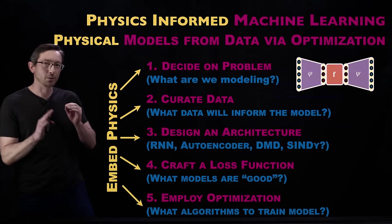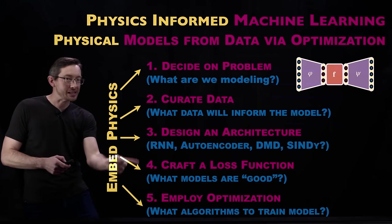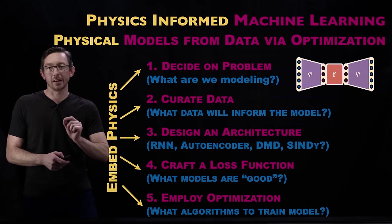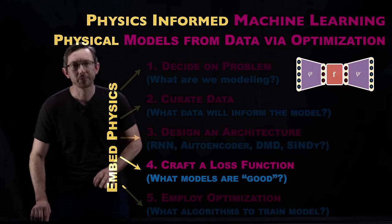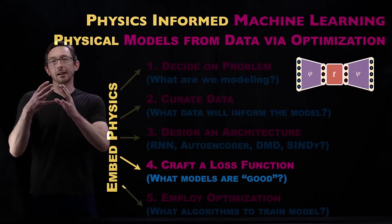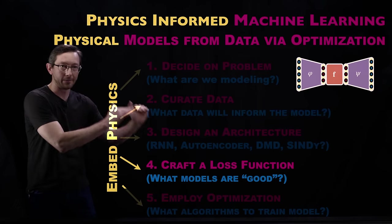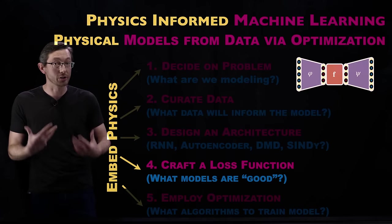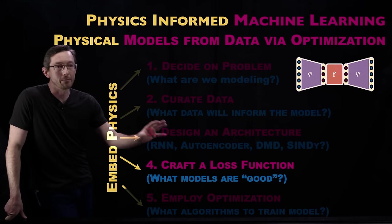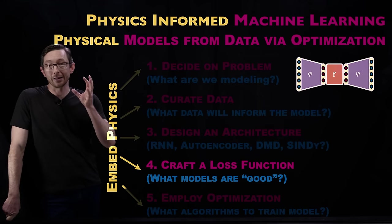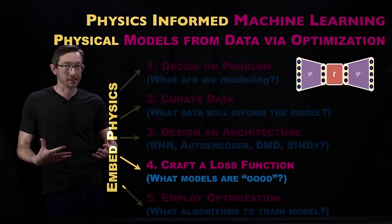Welcome back. Today we're talking about physics-informed machine learning, specifically the fourth stage: how do you craft a loss function? In this five-step pipeline of how we build a machine learning model, we're going to talk about how you can build a loss function that allows you to embed partial knowledge of your physics into the process.